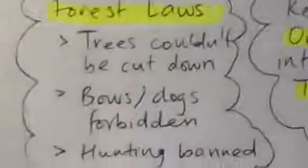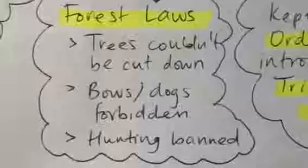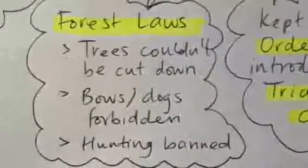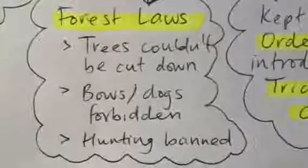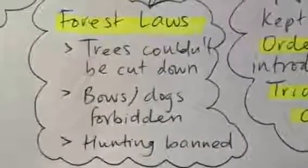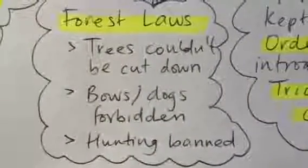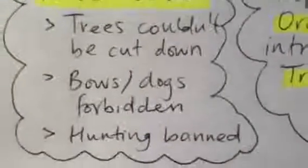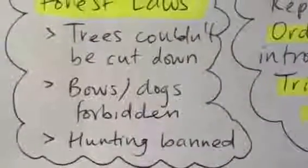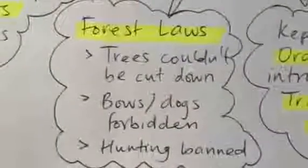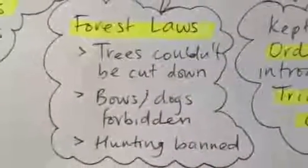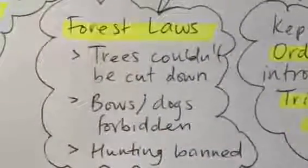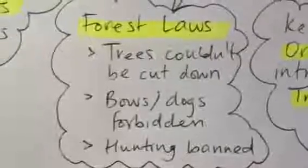A really important one, the Normans introduced the forest laws, the hated forest laws. These basically said that trees in royal forests couldn't be cut down. Anyone living near woods or forests that were deemed to be the king's land were not allowed to own bow and arrows or dogs. So they were forbidden. And hunting of deer, especially in royal forests, was banned. And this didn't just apply to forests and woods. This is all land, which was now under the command of William the Conqueror and the Normans.